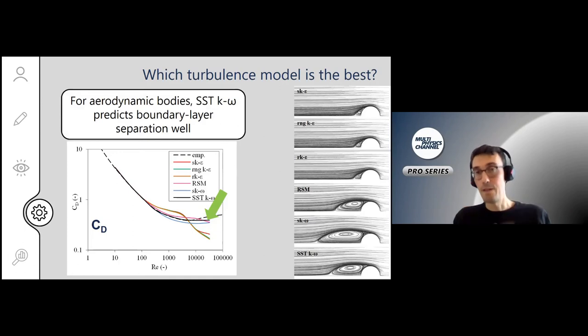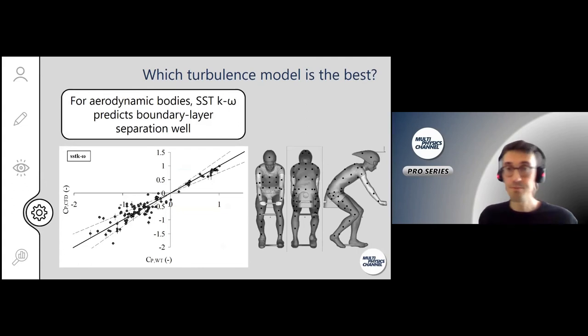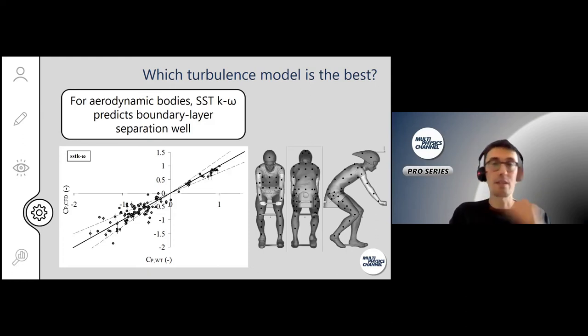If we look at another flow problem, a model of a cyclist which we tested in the wind tunnel with hundreds of pressure sensors on its surface, and we compare wind tunnel with CFD, you see the pressure coefficients on the leeward and windward side. You see actually a quite good agreement. We tested a lot of turbulence models—this one was the best for aerodynamic bodies where boundary layer separation is really important. For Formula One cars, it will also be a similar problem.